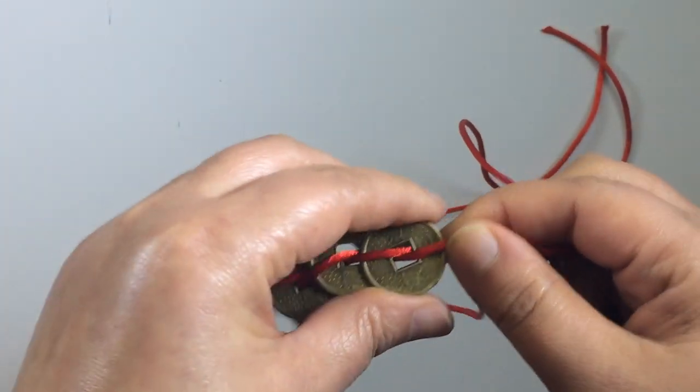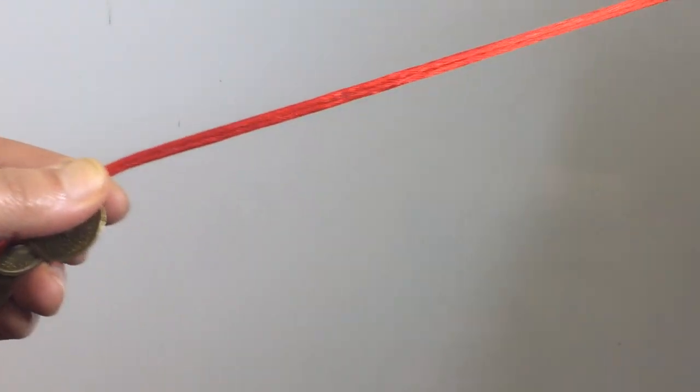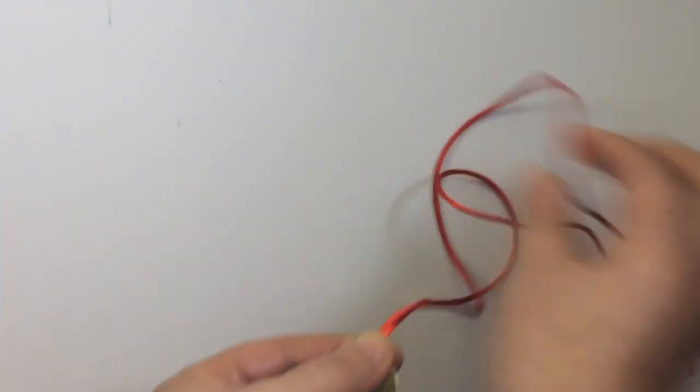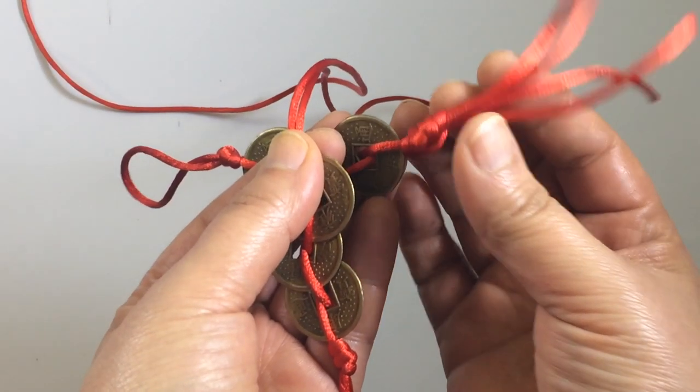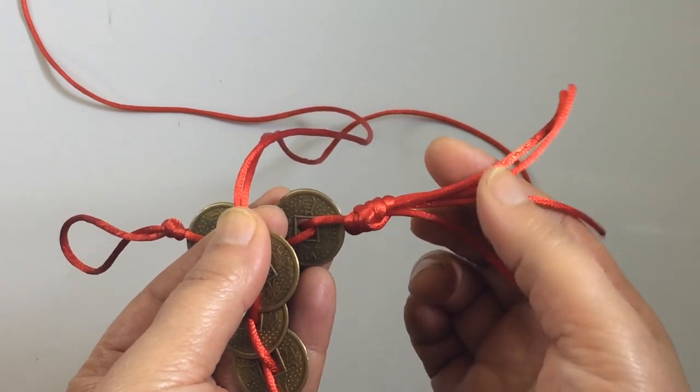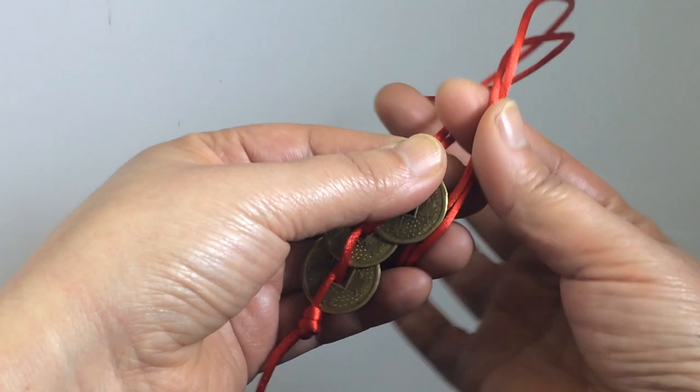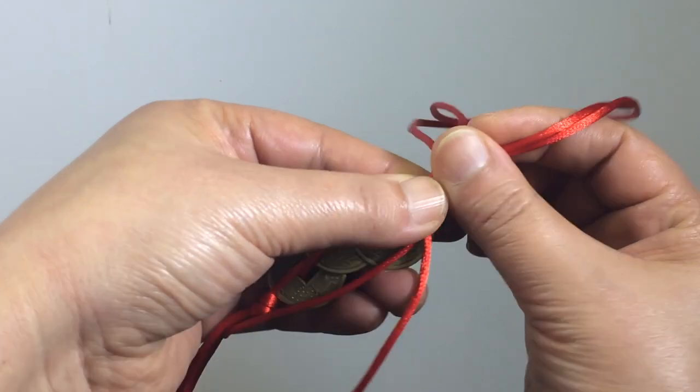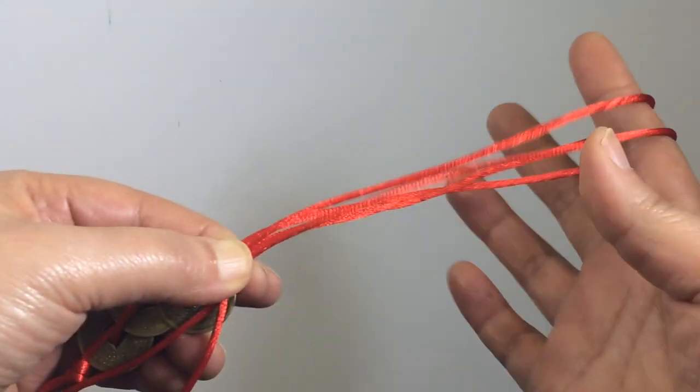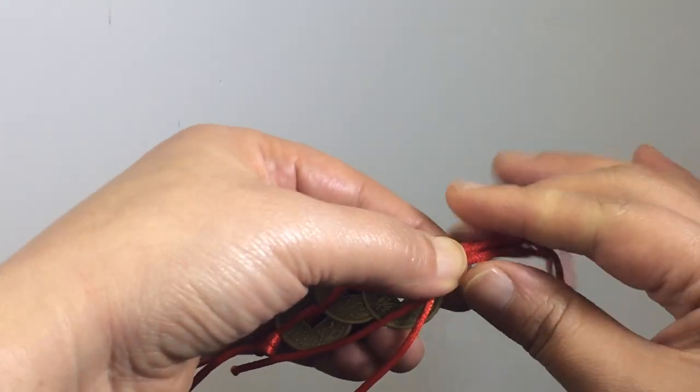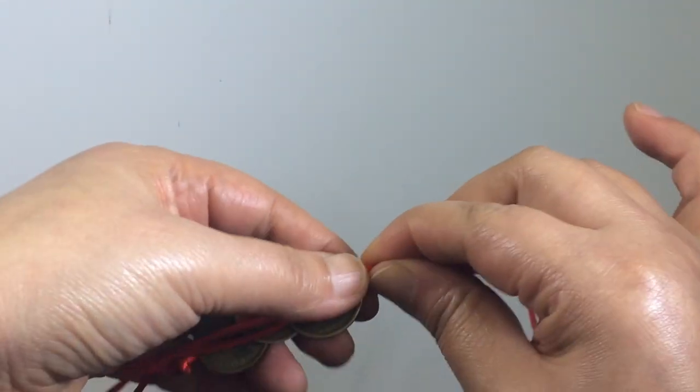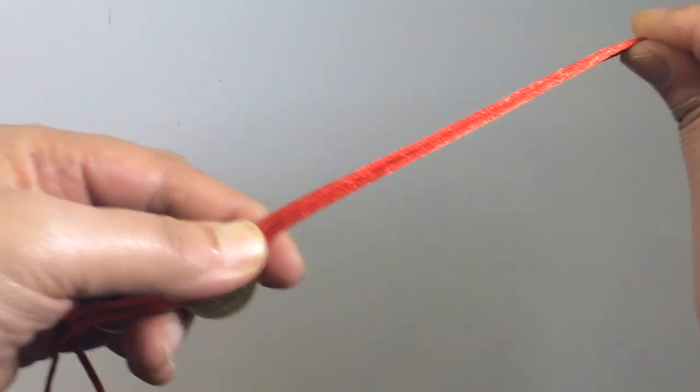Now what we're going to do is make a very simple tassel. Before you cut the string, what you're going to do is very easy. Just hold it like that, doesn't matter, you can leave a bit long and cut it shorter. You just use this full string on your finger, go around it and tie the knot.